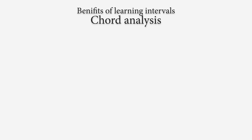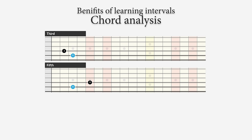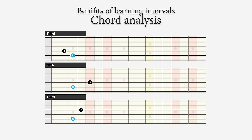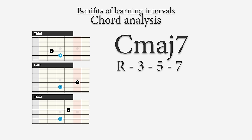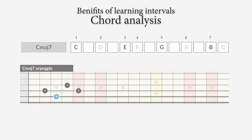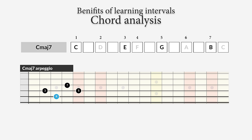Another way to benefit from interval knowledge is chord analysis. If you have a good understanding of the 3rd, 5th, and 7th, you can understand chords much better. Take the major 7th chord for instance — if someone tells you it consists of a major 3rd, a perfect 5th, and a major 7th interval, it's now easy to build this on the neck of the guitar, visualize it better, and understand it better. Find the major 3rd, find the 5th, find the major 7th and you're done.